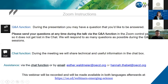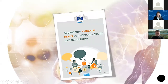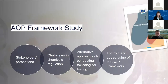The motivation behind today's webinar on building trust in the scientific evidence base supporting chemical risk assessment and the role of the AOP framework was a recently published report from the JRC on addressing evidence needs in chemical policy and regulation. This report is the culmination of the AOP framework study that aimed to get insights into stakeholders' perceptions of the main challenges facing chemicals regulation, on alternative approaches to toxicological testing, and on the role and added value of the AOP framework.